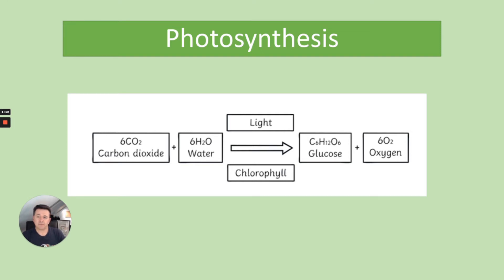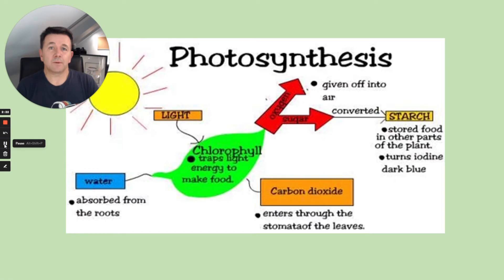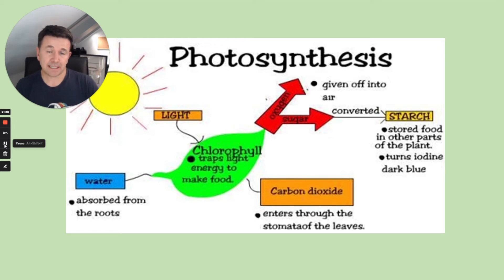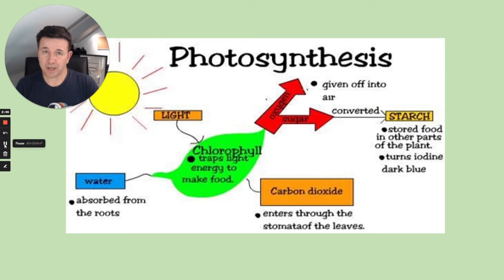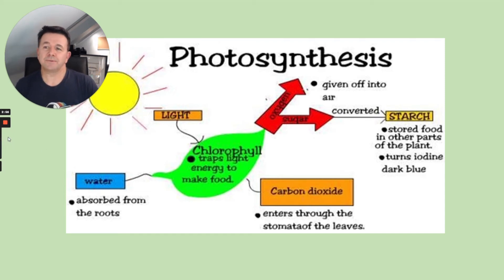Some of that oxygen might be used for respiration. To summarise: carbon dioxide from the air enters the stomata through the leaf, water is absorbed from the roots and travels up the stem to the leaf, and light from the sun is used as energy to make food. Sugars or glucose are made, sometimes stored as starch — as you'll remember from the iodine test that turns dark blue — and oxygen is given off into the air.